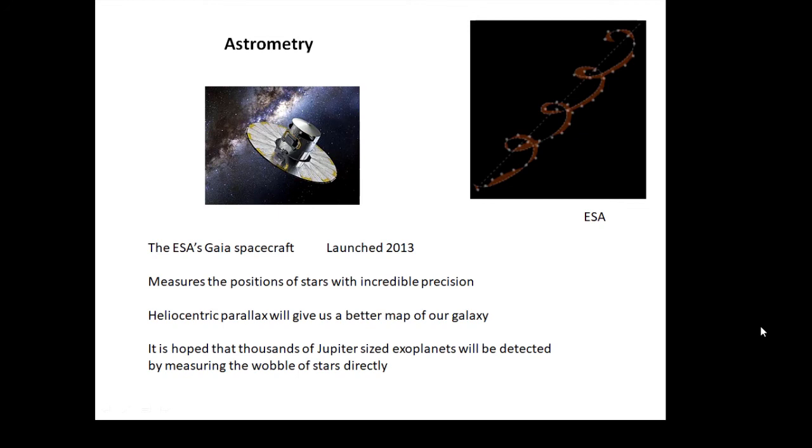But also it detected this stellar wobble, and from this stellar wobble you can actually find evidence for exoplanets. So the Gaia spacecraft, using astrometry—actually directly measuring the position of the stars—has found evidence for lots of exoplanets.